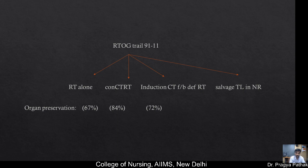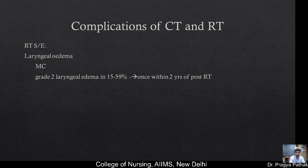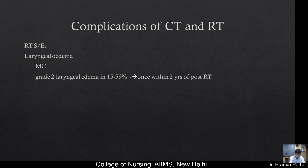Complications of radiotherapy and chemotherapy: most common side effect is laryngeal oedema, with grade 2 laryngeal oedema in 15-59%, occurring within 2 years post-RT. Acute side effects: fatigue, mucositis, dermatitis, dysphagia, delayed wound healing, and gastroenteritis. Chronic side effects: decreased salivation and high chances of secondary malignancy. The Veterans Affairs Laryngeal Cancer Study Group trial (1990s) compared total laryngectomy against induction chemotherapy (cisplatin and 5-FU) followed by RT: 64% responded to chemotherapy, 36% failed and required total laryngectomy.